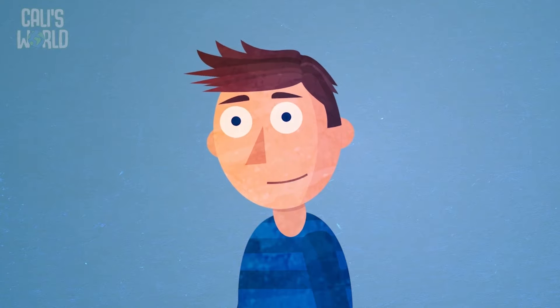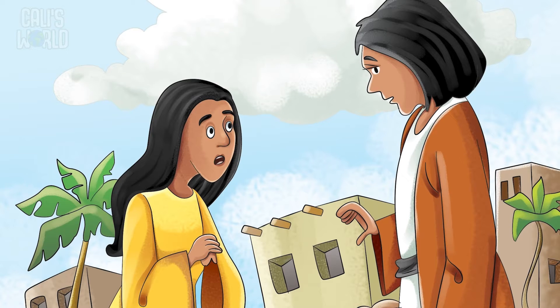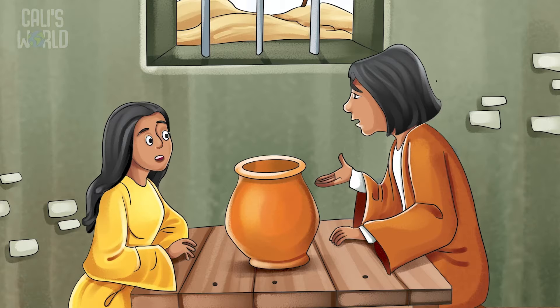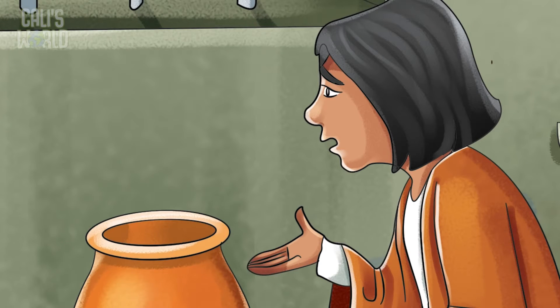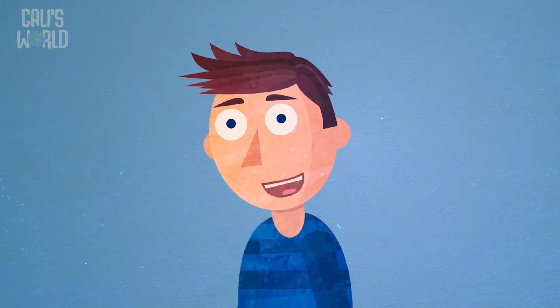And she owed money to someone, but she couldn't pay it back. They said that they would take away her two sons if she didn't pay. Elisha wanted to help this woman, so he asked her what she had in her house.